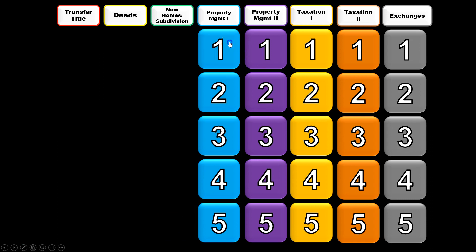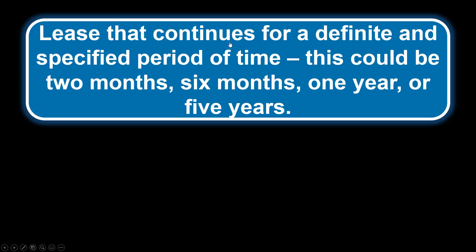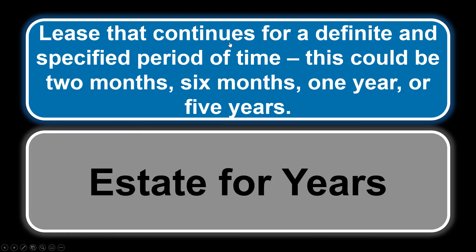Property management. A lease that continues for a definite and specified period of time — this could be two months, six months, one year, or five years. You should be thinking of your leasehold estates. Which one has a definite start and end date? Estate for years. Remember, even though it has 'years' in the name, it doesn't need to be for years — it can be for one day or two days. Vacation rentals are estate for years, for instance.